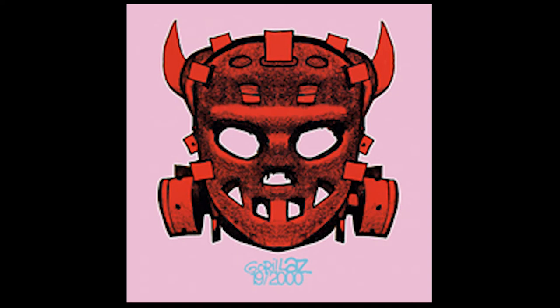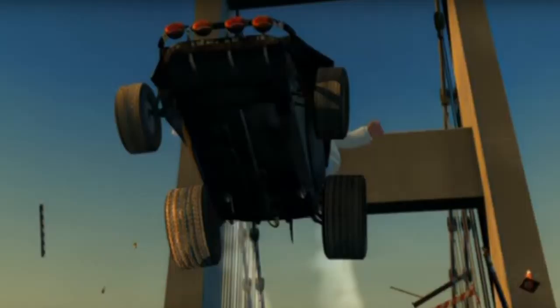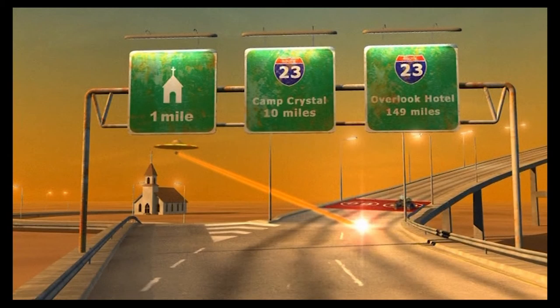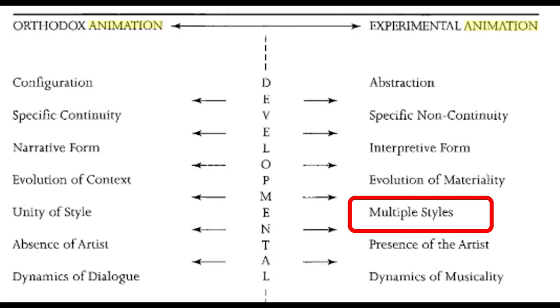The video for 19-2000 incorporates a mixture of different animation mediums or styles. As usual, the characters of the Gorillaz group are depicted in their cartoon personas that are drawn in a cell animation style. However, during the video, the four characters enter a vehicle and encounter different terrains that change from cell animation to computer animation. This particular feature of animation conforms to the experimental side of Wells' diagram of orthodoxy. When looking at the graph, we can see that this use of animation is classed as experimental, due to the inclusion of multiple styles on the respective side.